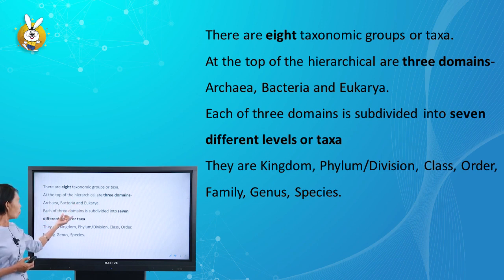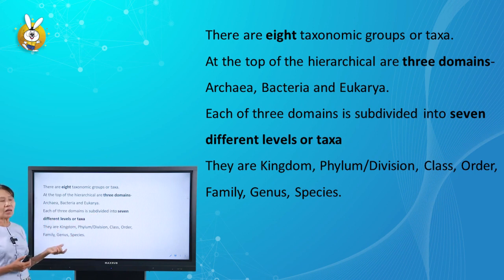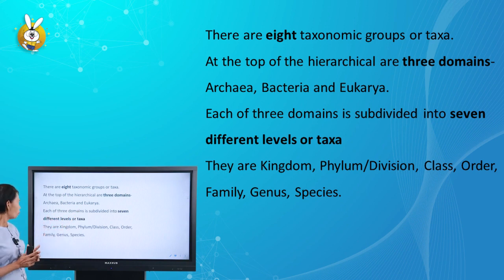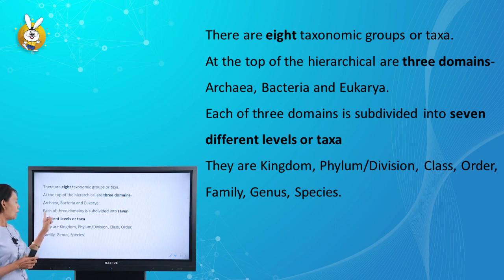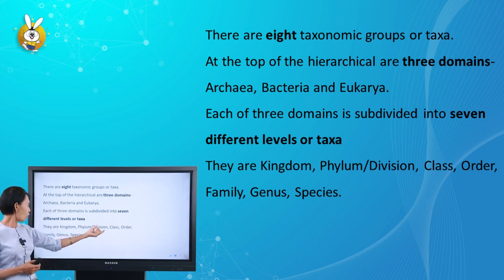Each of the three domains is divided into seven different levels. They are the kingdom, phylum or division, class, order, family, genus, and species.